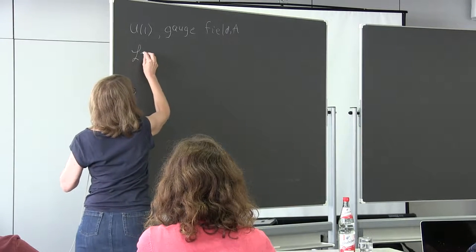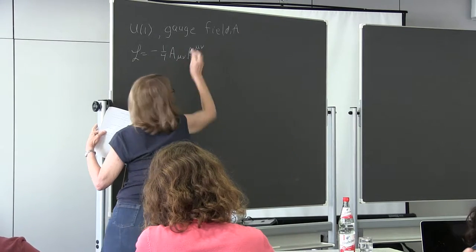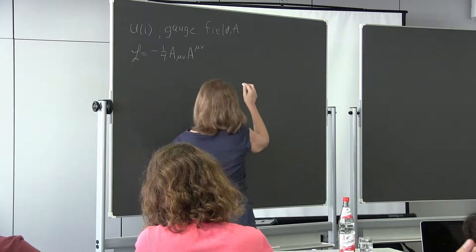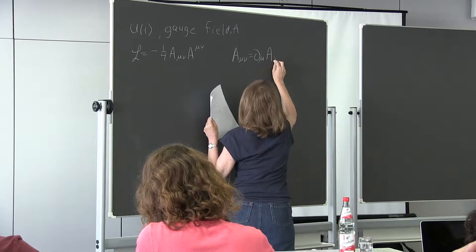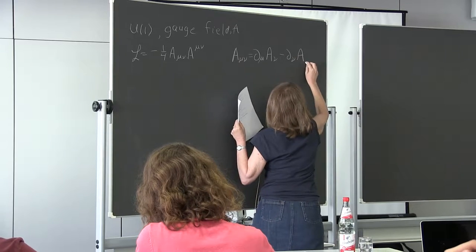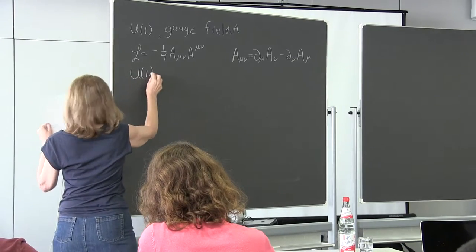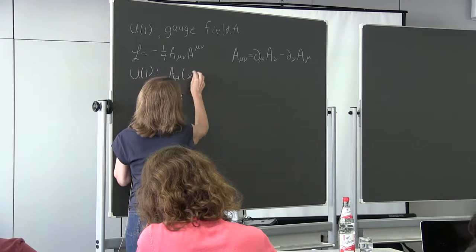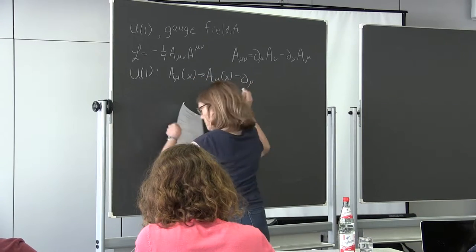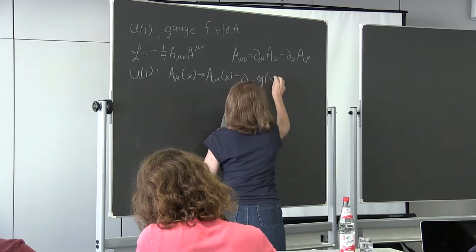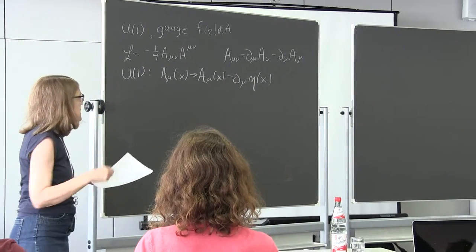The Lagrangian is minus one-quarter F_μν F^μν, where F_μν equals ∂_μ A_ν minus ∂_ν A_μ. You all know this from quantum electrodynamics. When we write this down, it has a U(1) invariance under A_μ going to A_μ minus ∂_μ Λ, where Λ can be anything. This is obviously invariant under a gauge transformation — this is gauge invariance.